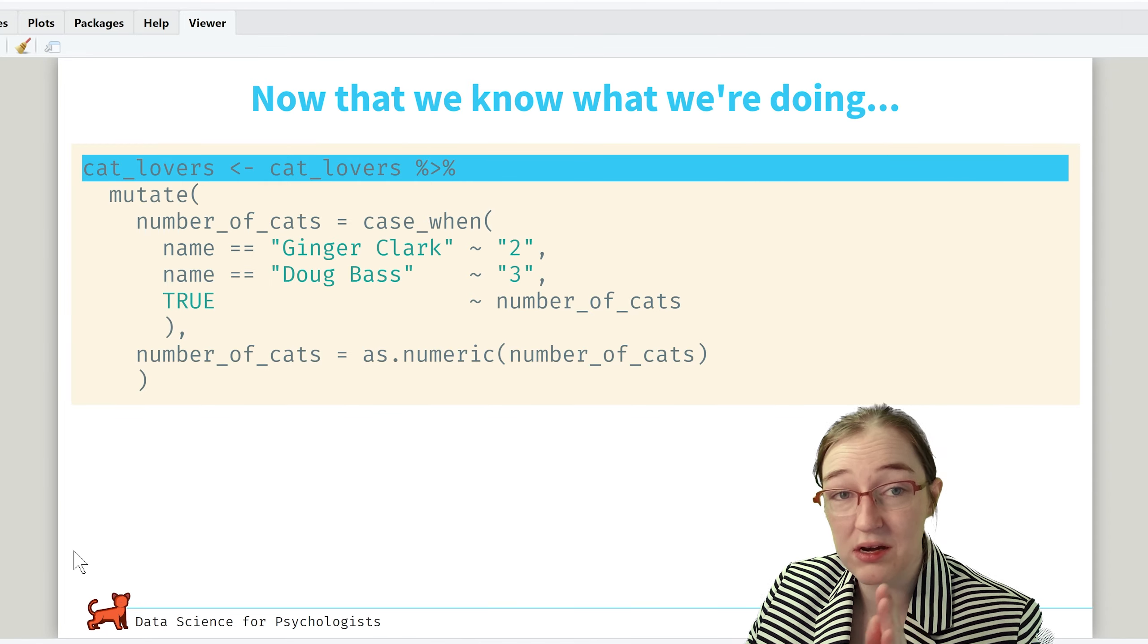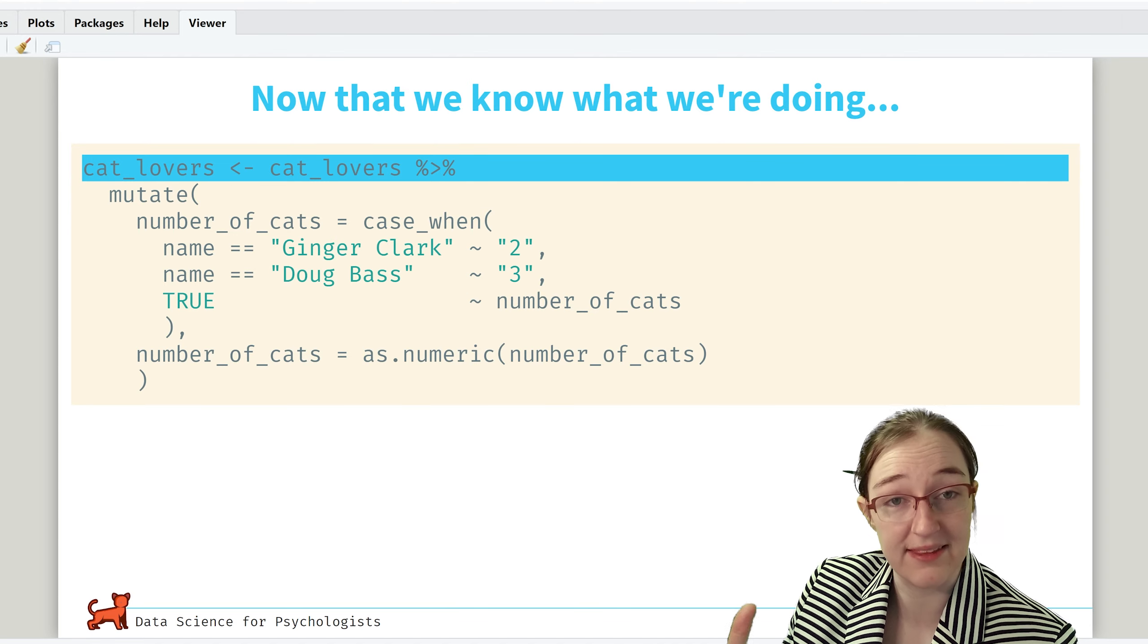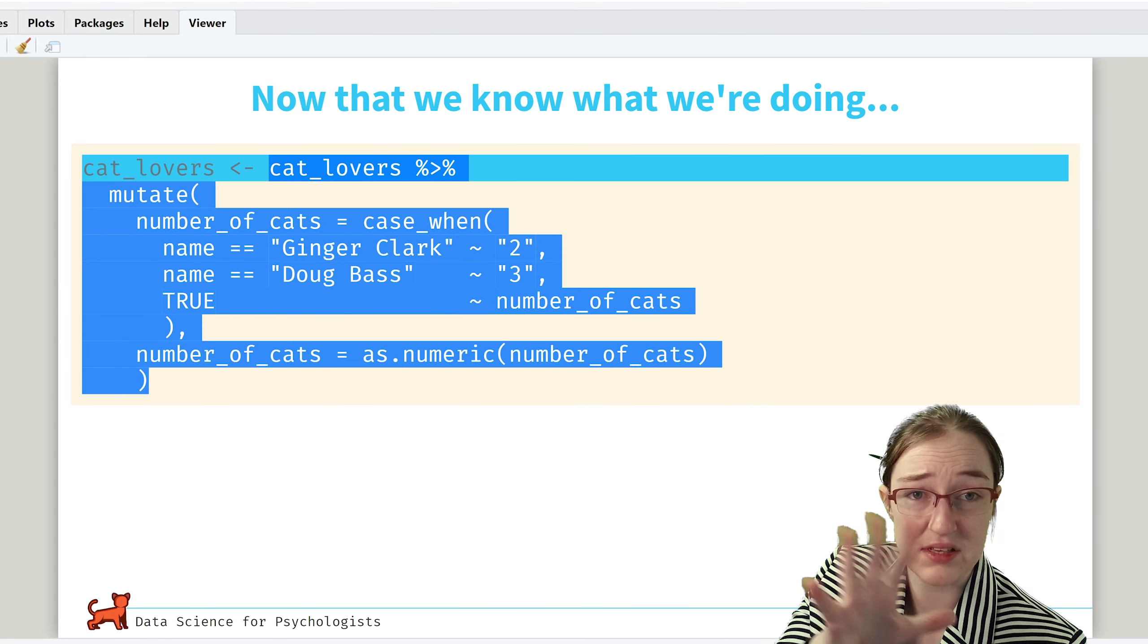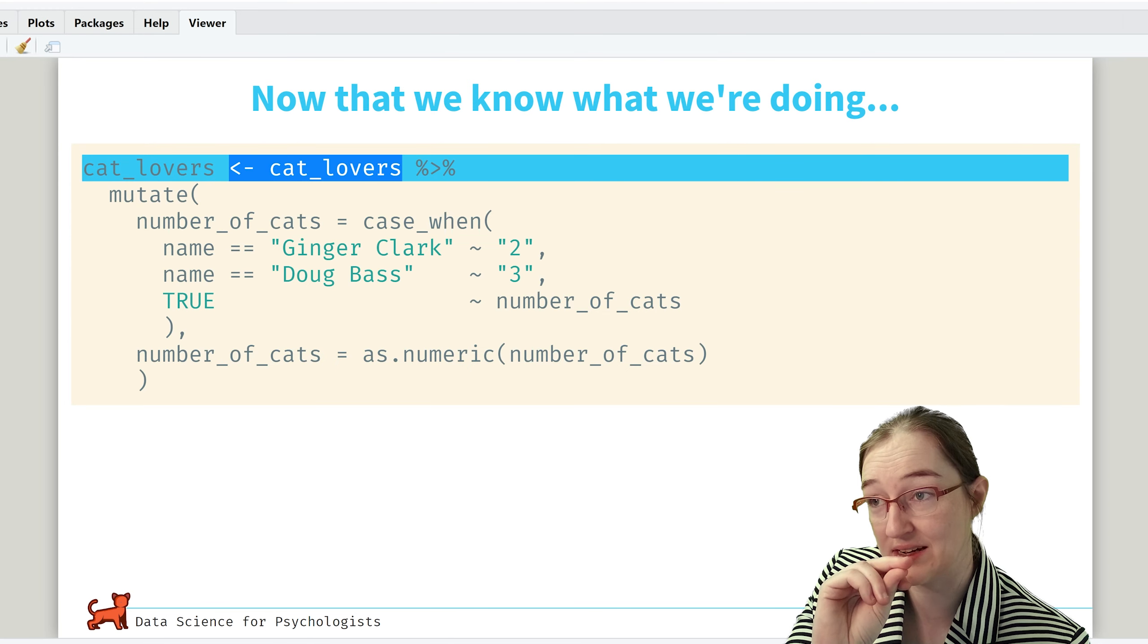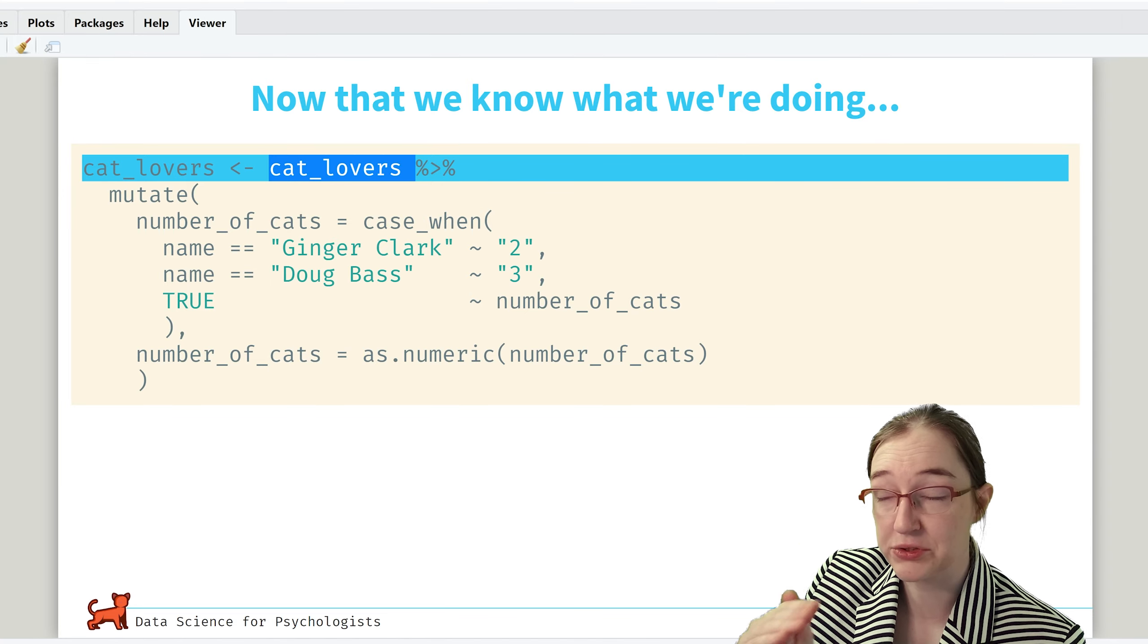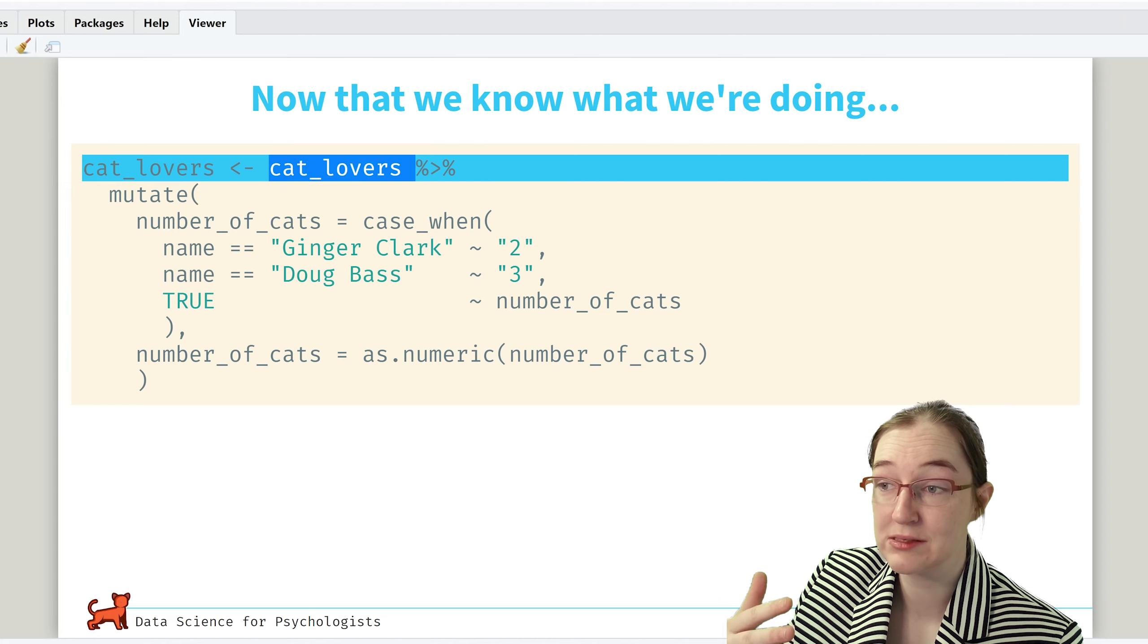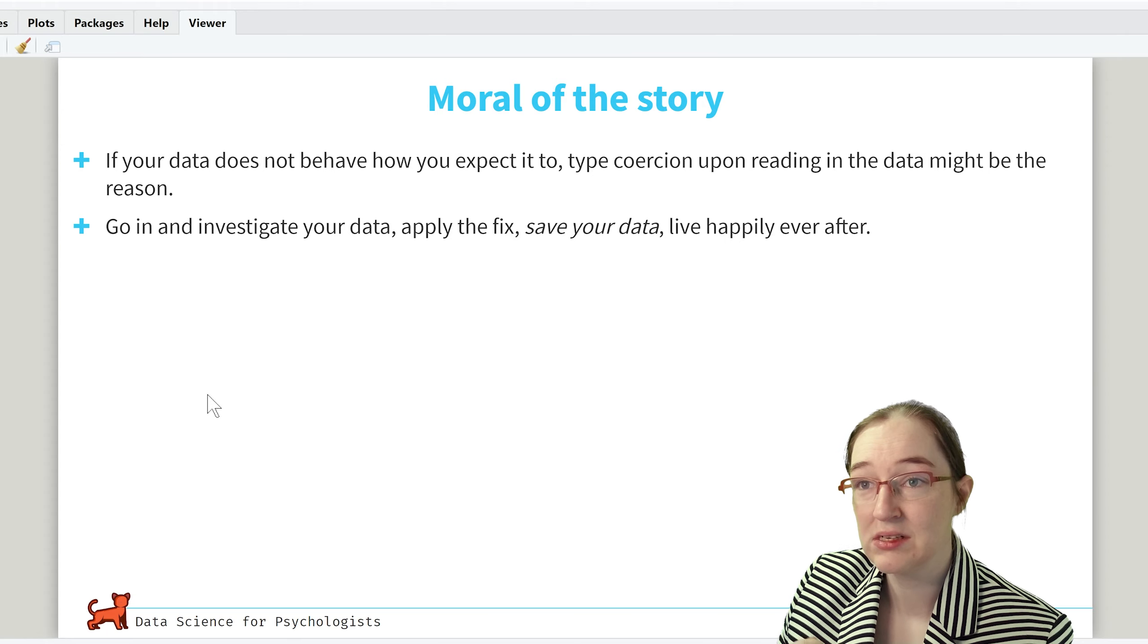So yeah, so now that we know what we're doing, we're going to also assign all of this hard work to cat_lovers. Essentially what's happening here is we are doing all the things we already did, but we are cleaning up our data and assigning our data to cat_lovers, and essentially replacing it with our updates. So now when we work with cat_lovers within our environment, we will have that numeric data that we want.